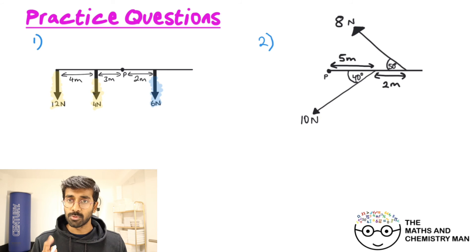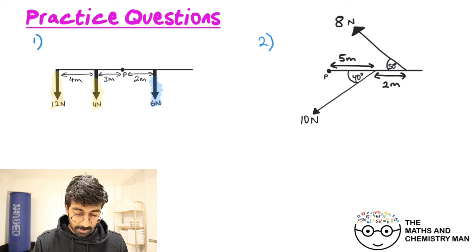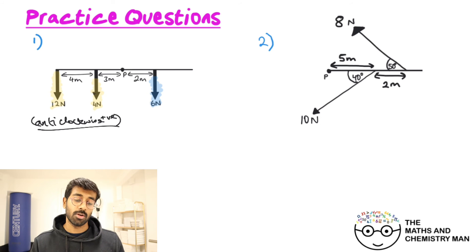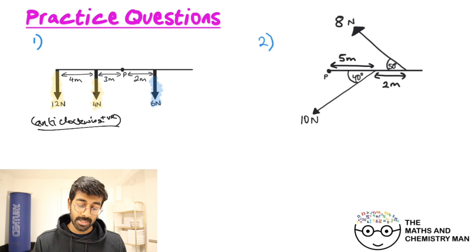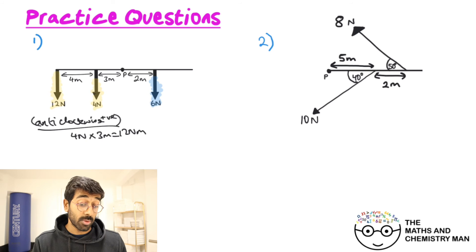Anti-clockwise: two forces highlighted in yellow. Clockwise: the six Newton force. Calculating the anti-clockwise moments: four Newtons multiplied by three meters gives 12 Newton meters. Then for the 12 Newton force, be careful — the total distance from the pivot is seven meters. So 12 Newtons times seven meters gives 84 Newton meters.